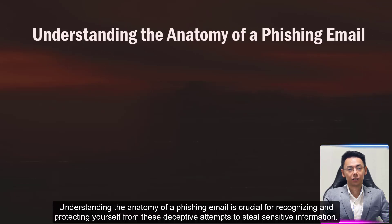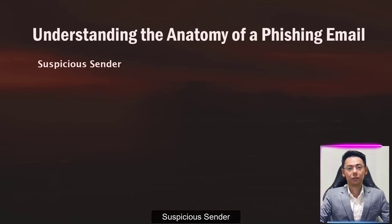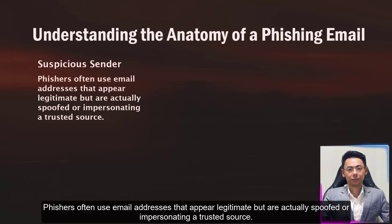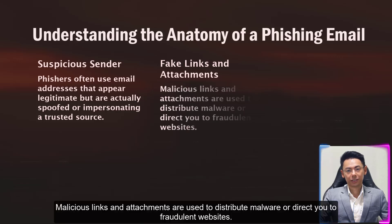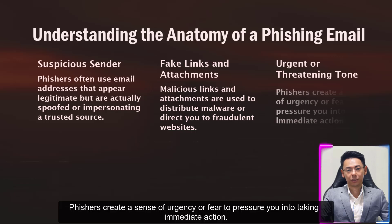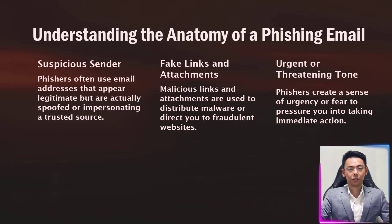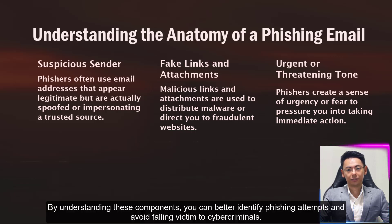Understanding the anatomy of a phishing email is crucial for recognizing and protecting yourself from these deceptive attempts to steal sensitive information. Suspicious sender: phishers often use email addresses that appear legitimate but are actually spoofed or impersonating a trusted source. Fake links and attachments: malicious links and attachments are used to distribute malware or direct you to fraudulent websites. Urgent or threatening tone: phishers create a sense of urgency or fear to pressure you into taking immediate action. By understanding these components, you can better identify phishing attempts and avoid falling victim to cyber-criminals.